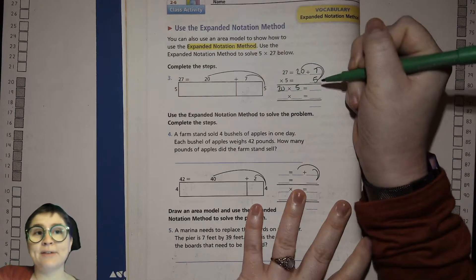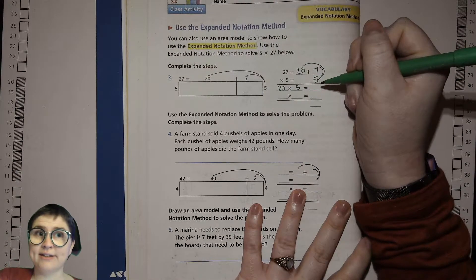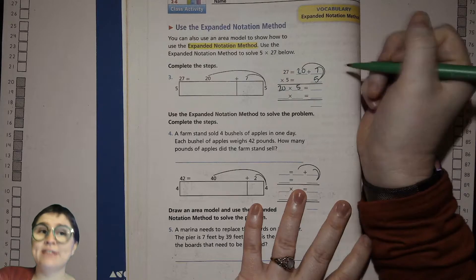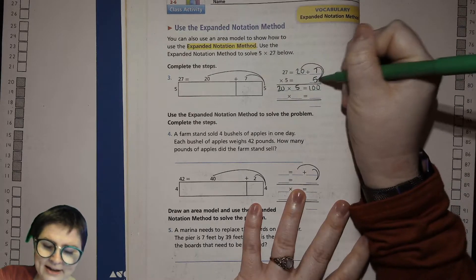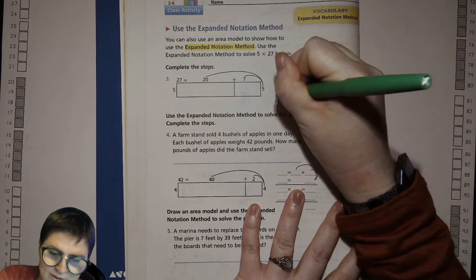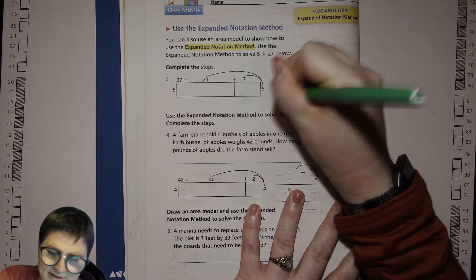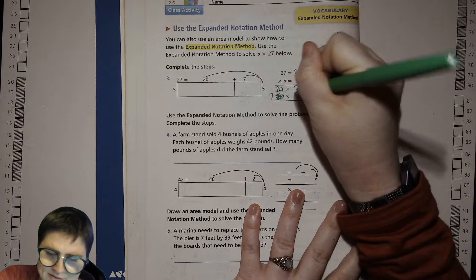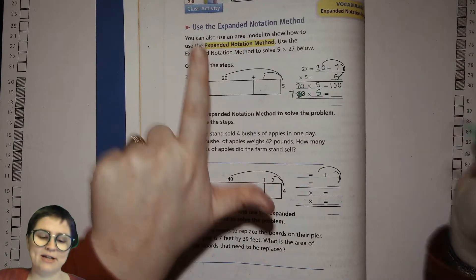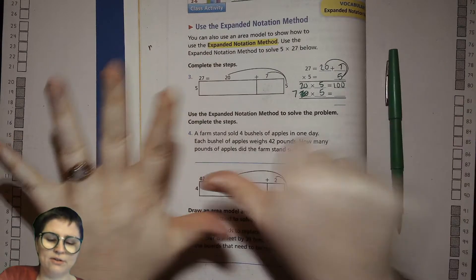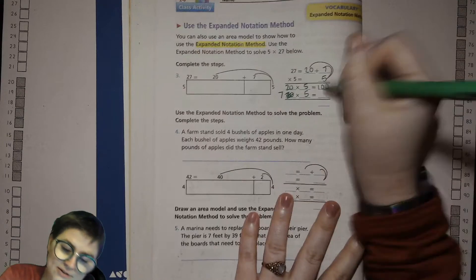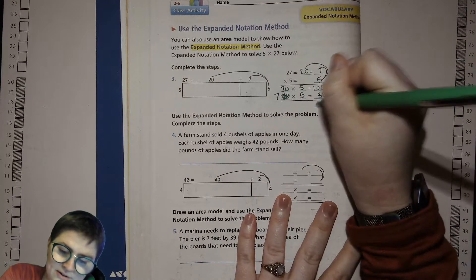The 5 is right here, and now we're making an equation for each of those. So 20 times 5? Well, 5 times 2 is 10, and 10 tens we know is 100. And then 7 times 5 is 35. So 100 plus 35 is 135.